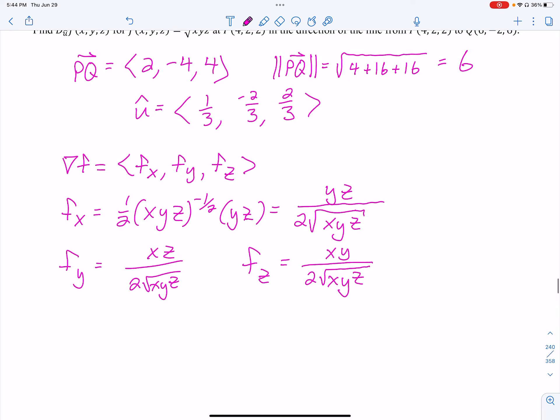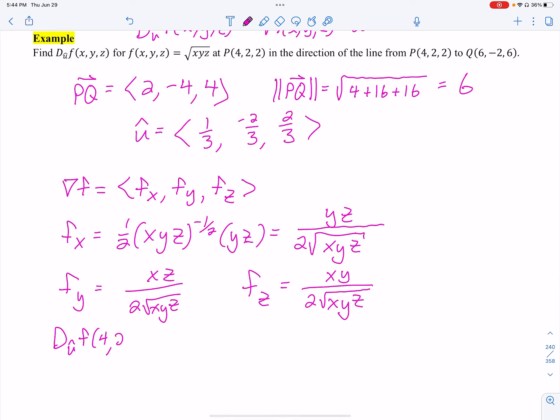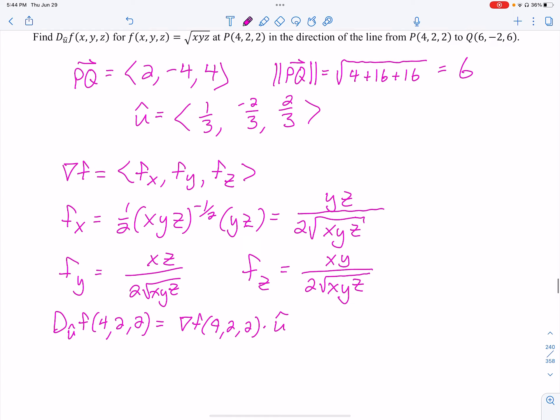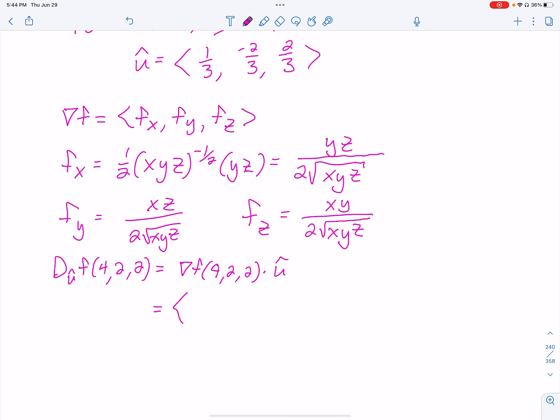Remember for our directional derivative of f, and then it's the point 4, 2, 2 that's in question. It's the gradient with those plugged in times the unit vector, or dotted with the unit vector. Essentially the same thing here. So I'm going to plug those in.